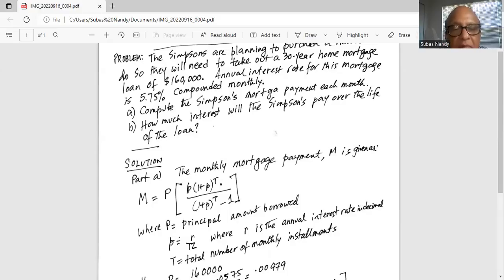There is a formula for M, which is capital P, in parentheses, small p times 1 plus p exponent T, divided by 1 plus small p exponent T minus 1.